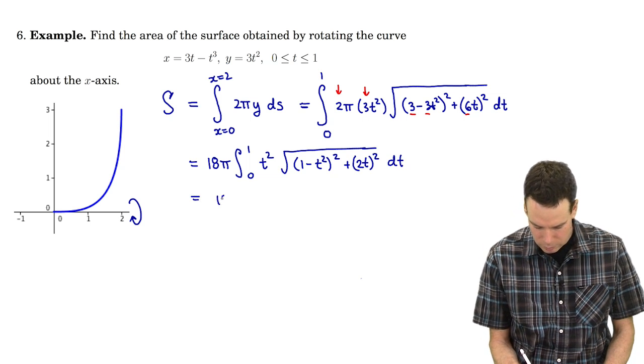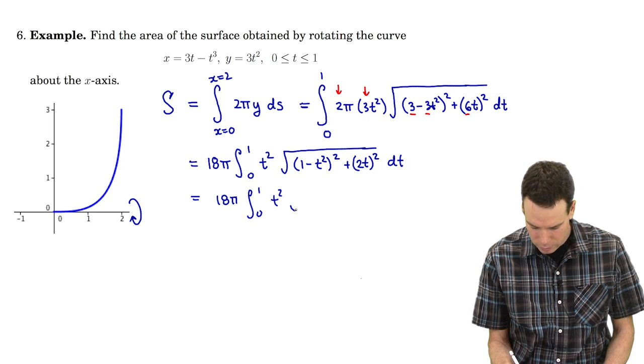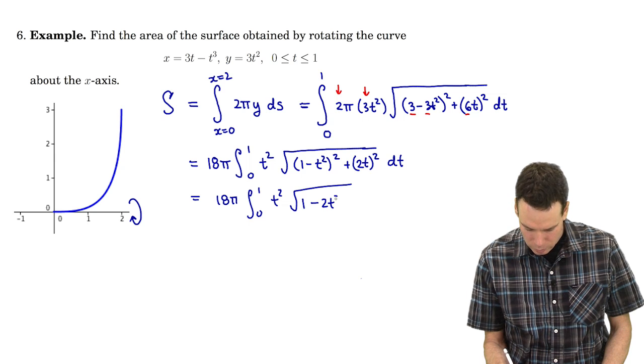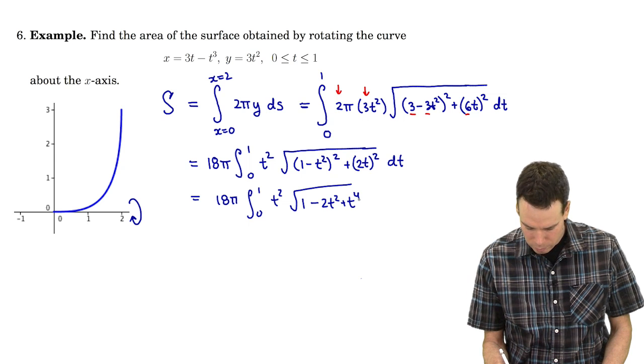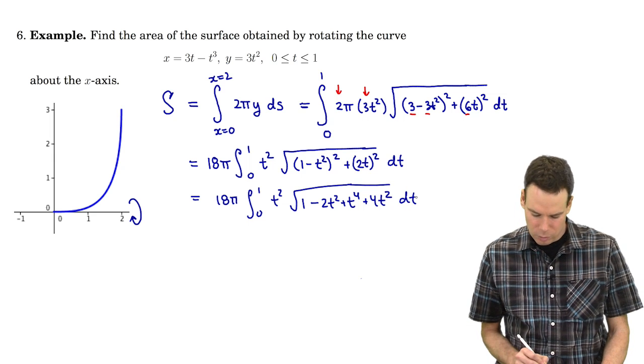Okay, so this is 18π times the integral from 0 to 1, t² times the square root of 1 - 2t² + t⁴ + 4t² dt. So I'm just expanding.